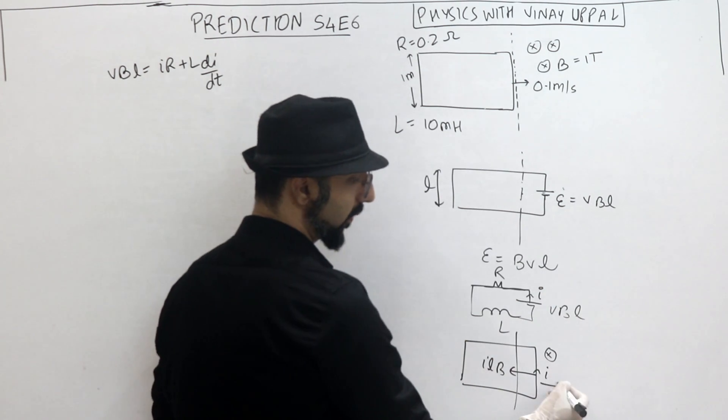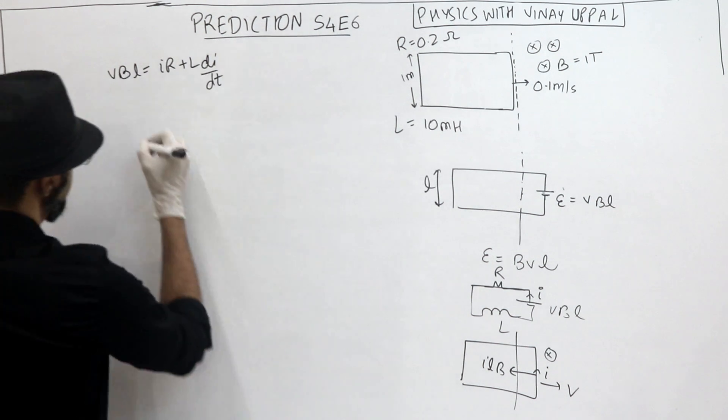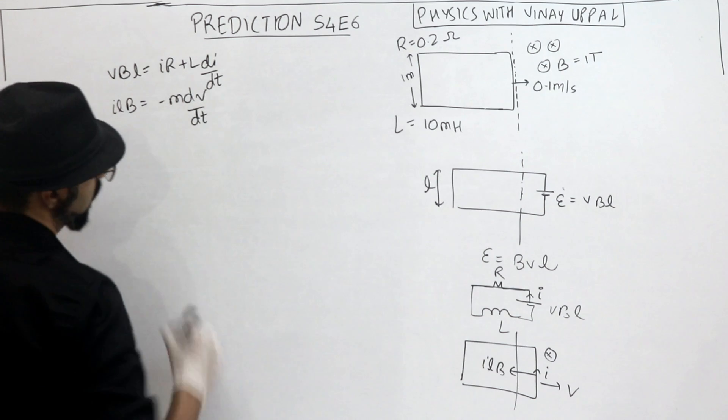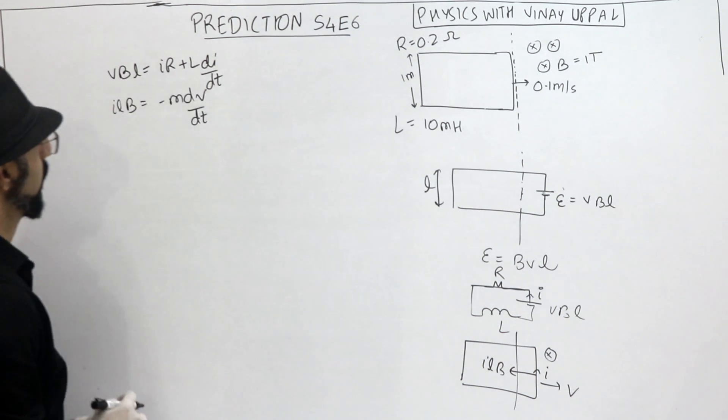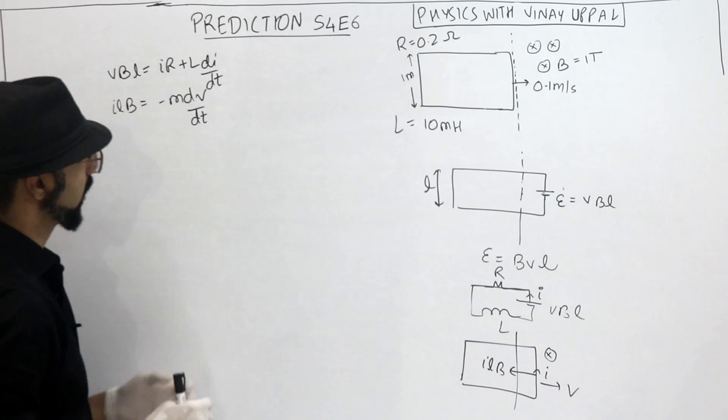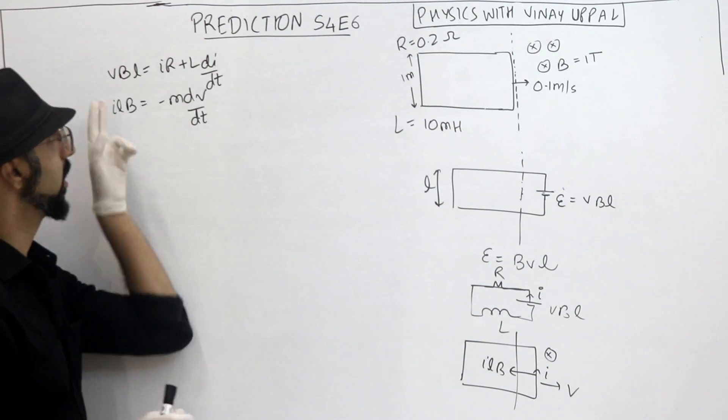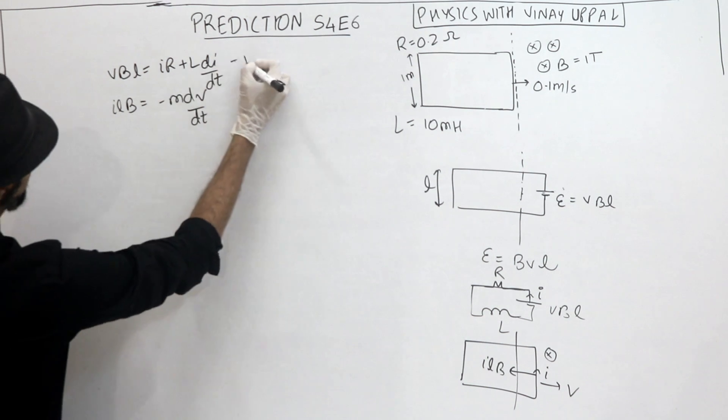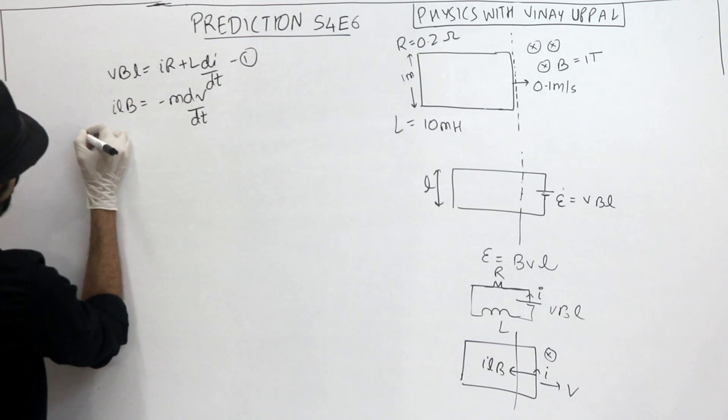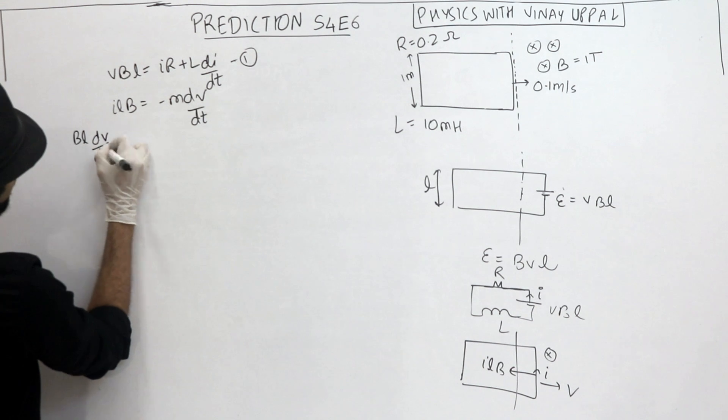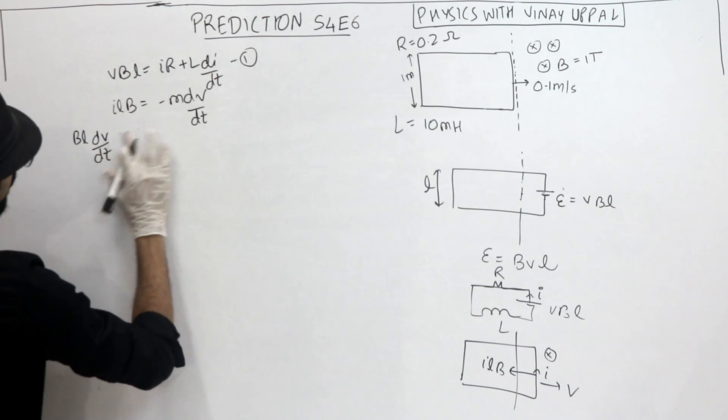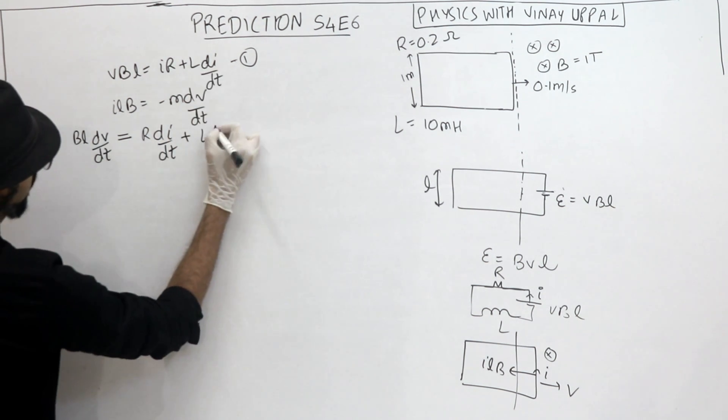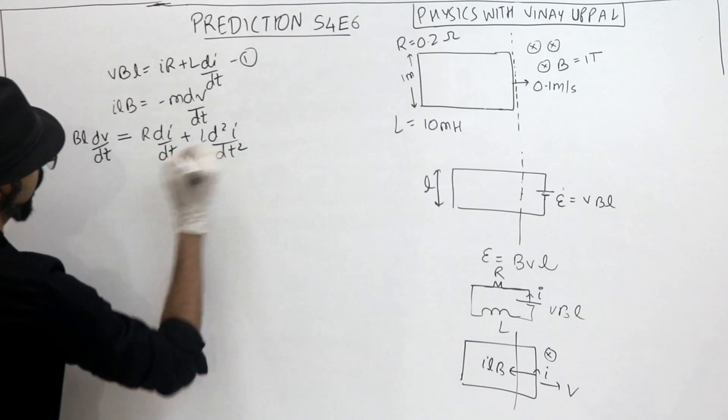So, the ILB force is leftward. Can I say, ILB should be equal to minus M dV/dt. The negative sign is because the velocity is decreasing. Right. Now, these two are coupled equations. Coupled, they have velocity and current dependent on each other. So I want current. So let me eliminate velocity by differentiating this first equation. So I differentiate this first equation. So BL into dV/dt should be equal to current differentiate, R into di/dt plus L into d²i/dt².